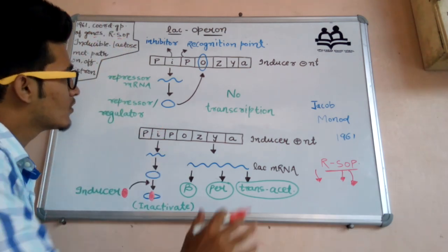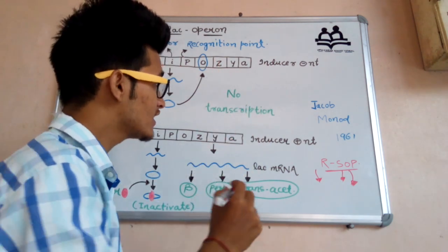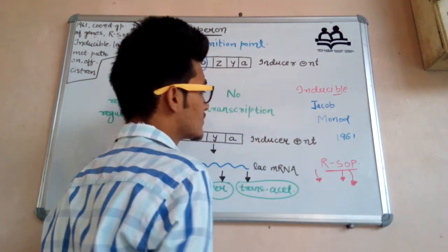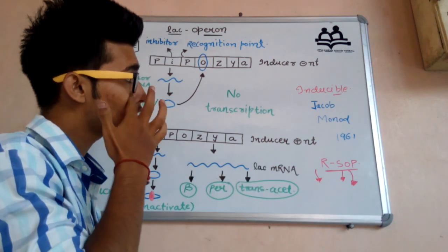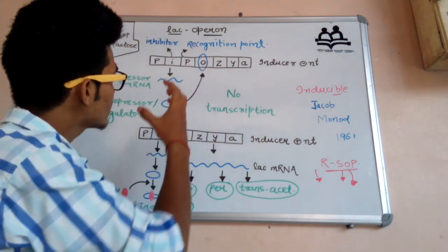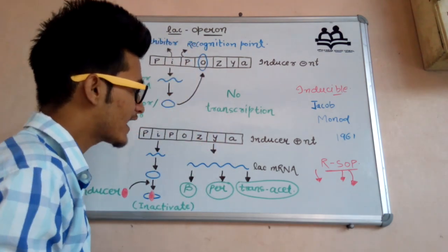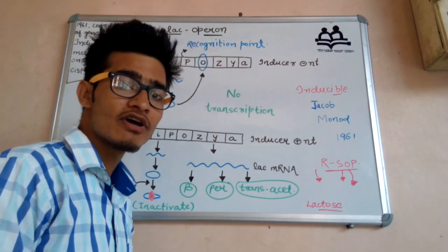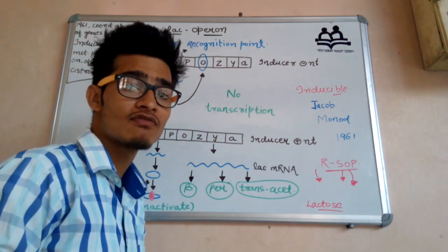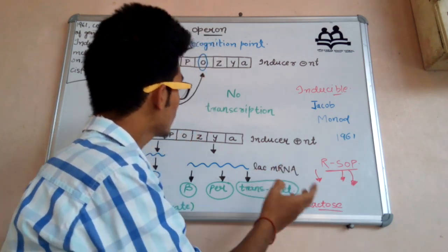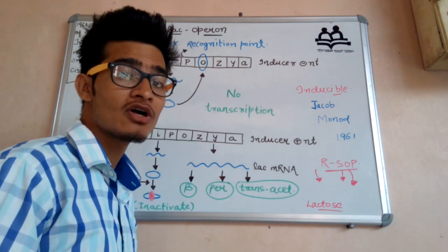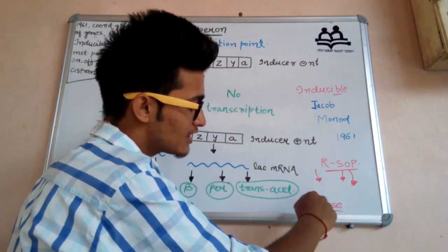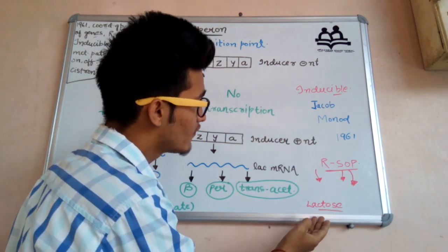This particular operon system — the Lac operon — is known as an inducible operon. It is called an inducible operon because 'lac' in Lac operon simply means lactose, which is a disaccharide formed from the combination of glucose and galactose. The lactose sugar will work as the inducer. Similarly, the TRP operon uses tryptophan. Since this operon uses lactose, it is called the Lac operon.